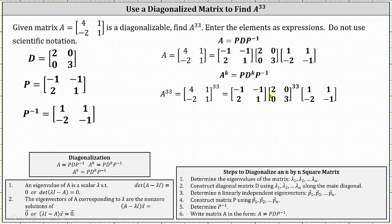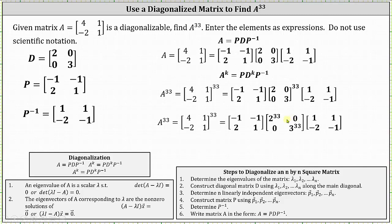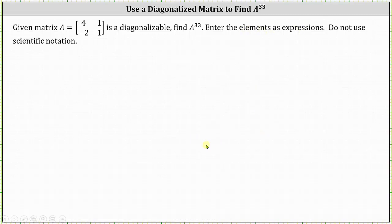Because matrix D is a diagonal matrix, to determine D to the power of 33, we raise the entries along the main diagonal to the 33rd power. To find A to the power of 33, we need to find the product of these three matrices. We don't want to convert to scientific notation — we're told to leave the entries as expressions. Let's multiply this out on the next slide.